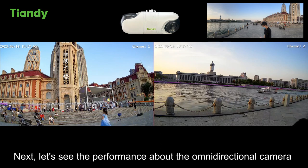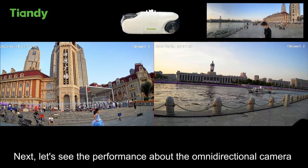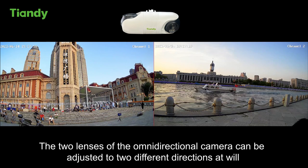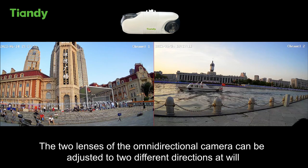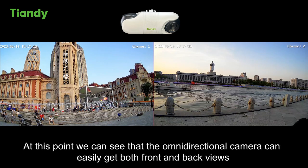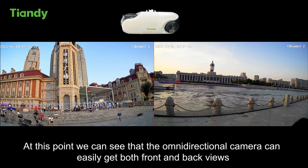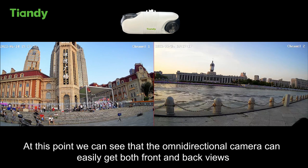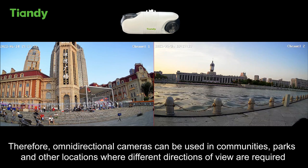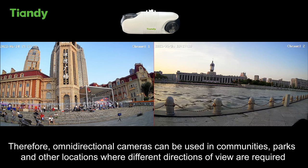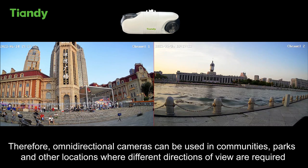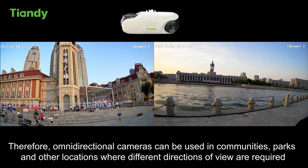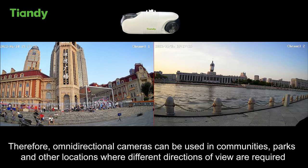Let's see the performance of the omnidirectional camera. The two lenses of the omnidirectional camera can be adjusted to two different directions of view. We can see that the omnidirectional camera can easily capture both front and back views simultaneously. Therefore, omnidirectional cameras can be used in communities, parks, and other locations where different directions of view are required.